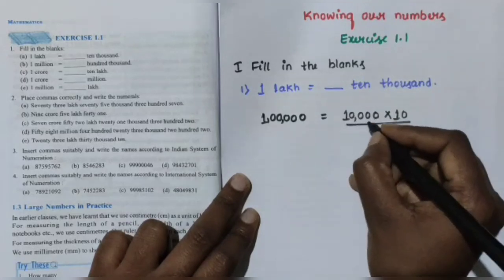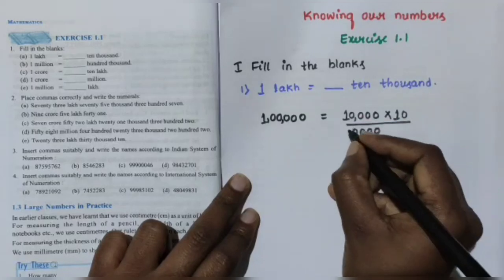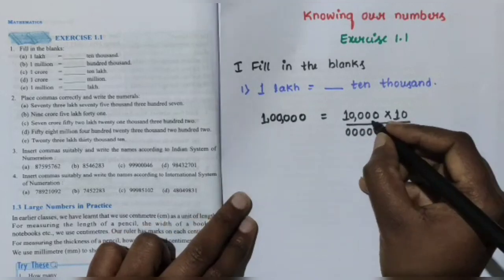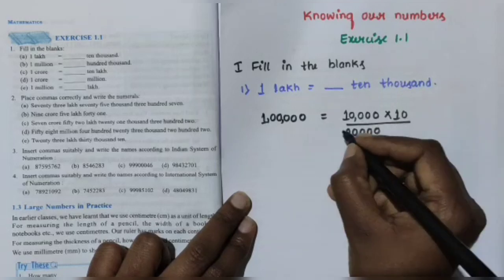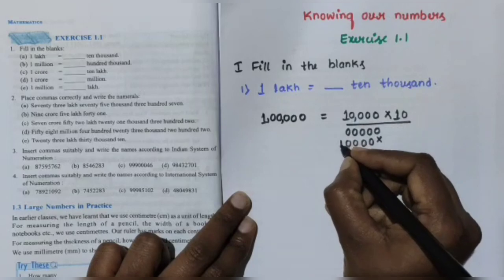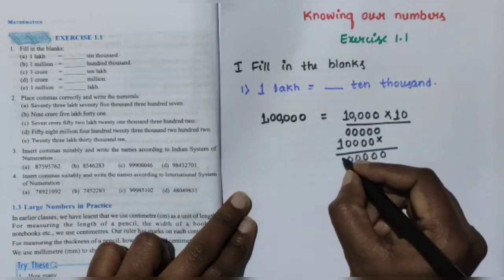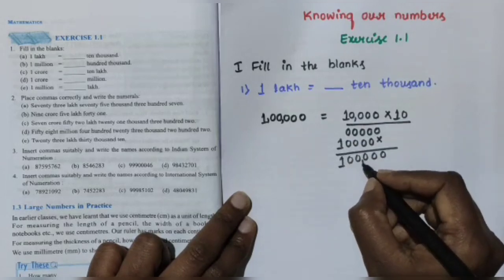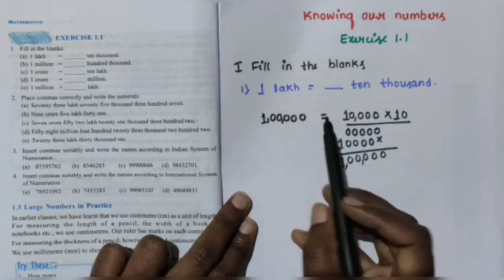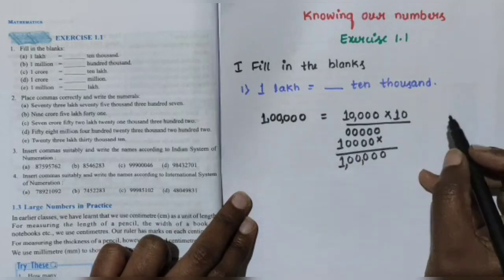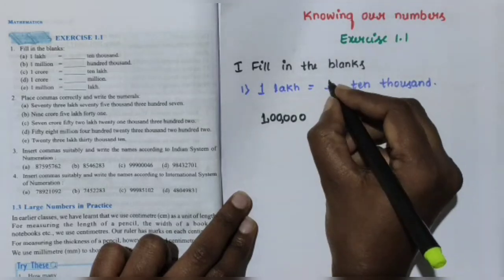Working out the multiplication: 10,000 multiplied by 10. Going through each digit: all the zero digits give 0, and 1 ones are 1. The result is 1,00,000. So 1 lakh is equal to 10 times 10,000. The answer is 10.